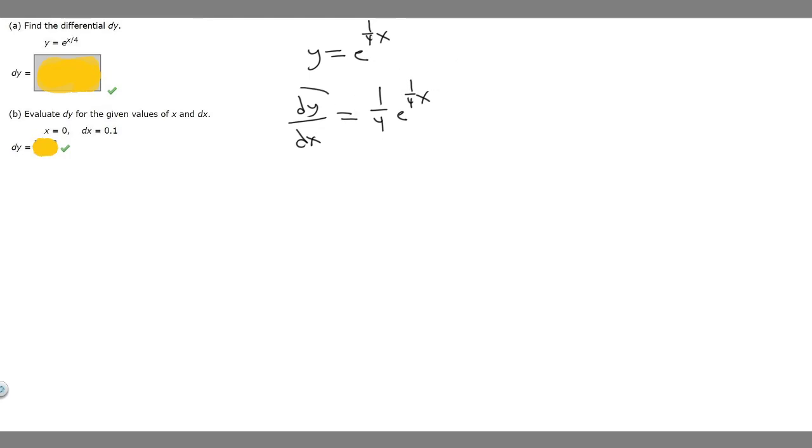So now we've got it like this. If we want to get dy by itself, which is what it's asking, we have to multiply both sides by dx. So we're going to get that dy is equal to 1 over 4 times e to the 1 over 4x dx. So that's going to be our answer for this part.